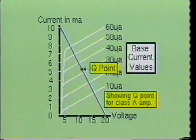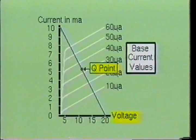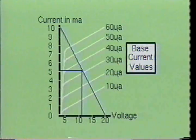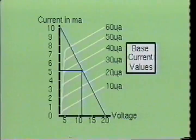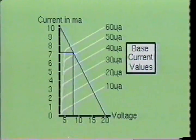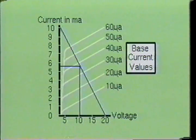The Q point is set by three parameters: the collector-to-emitter voltage, the collector current, and the base current. When the input signal is applied at the base, the base current will change, resulting in the other two parameters changing along the DC load line. When the base current increases, the parameters will shift up the DC load line, and when the base current decreases, the other two parameters will shift down the DC load line.